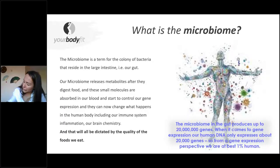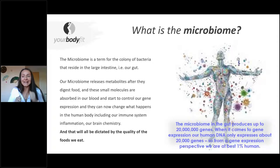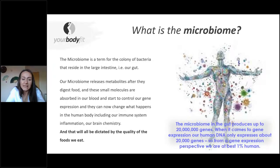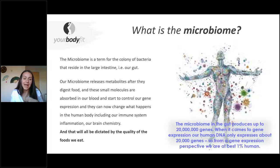There's a study showing that 80% of our serotonin — the hormone that makes us feel happy, especially after we exercise or eat chocolate — is actually released from the gut. It's almost like the gut lets the brain think it's in control, but really it all starts in the gut. Once we eat, our microbiome releases small molecules called metabolites. After we digest food, these molecules are absorbed by our blood and start to control gene expression, changing what happens in the body — including our immune system and brain chemistry.